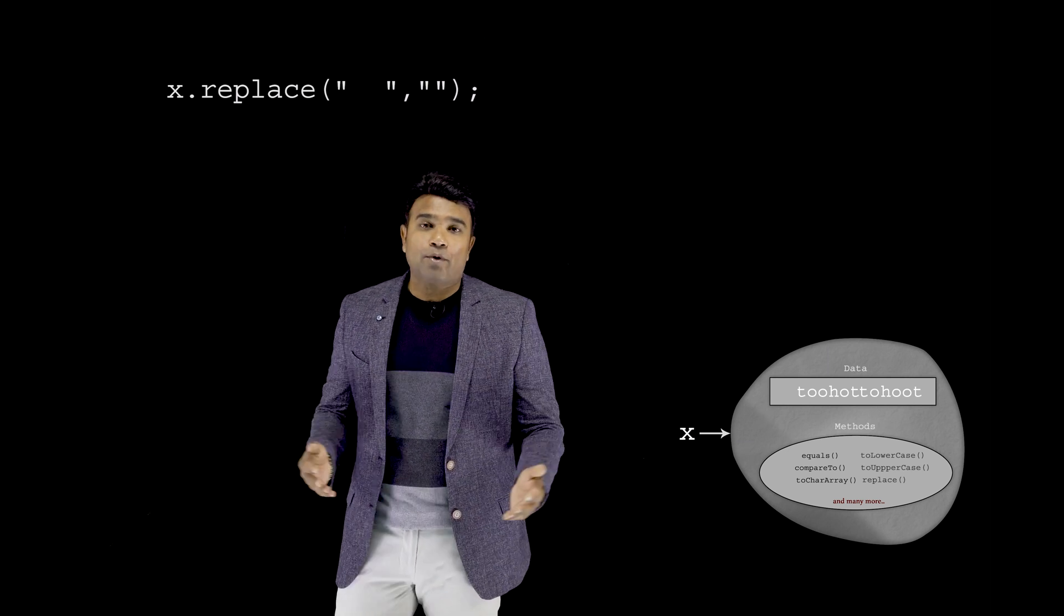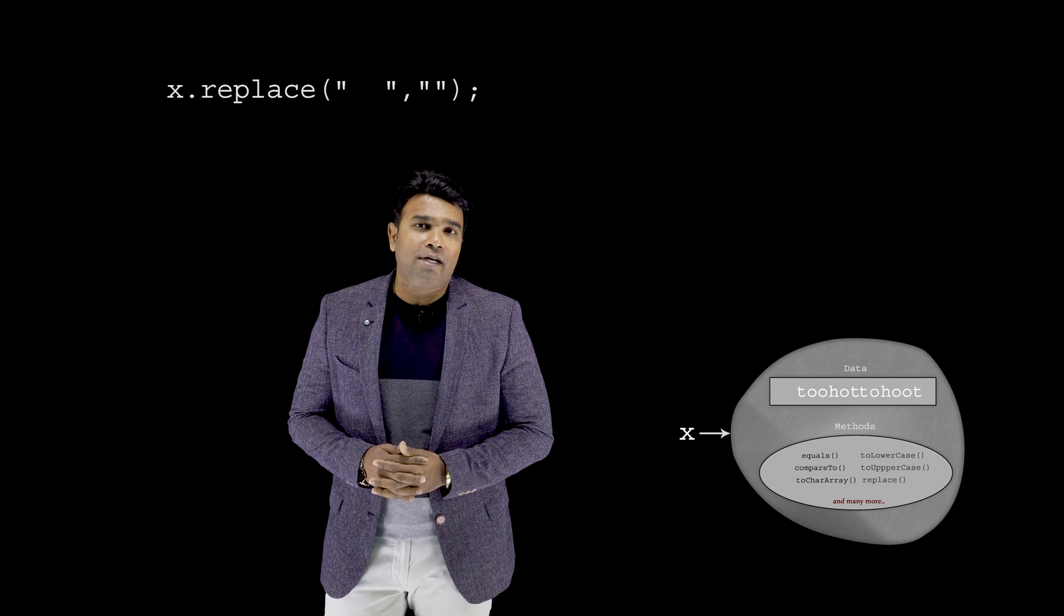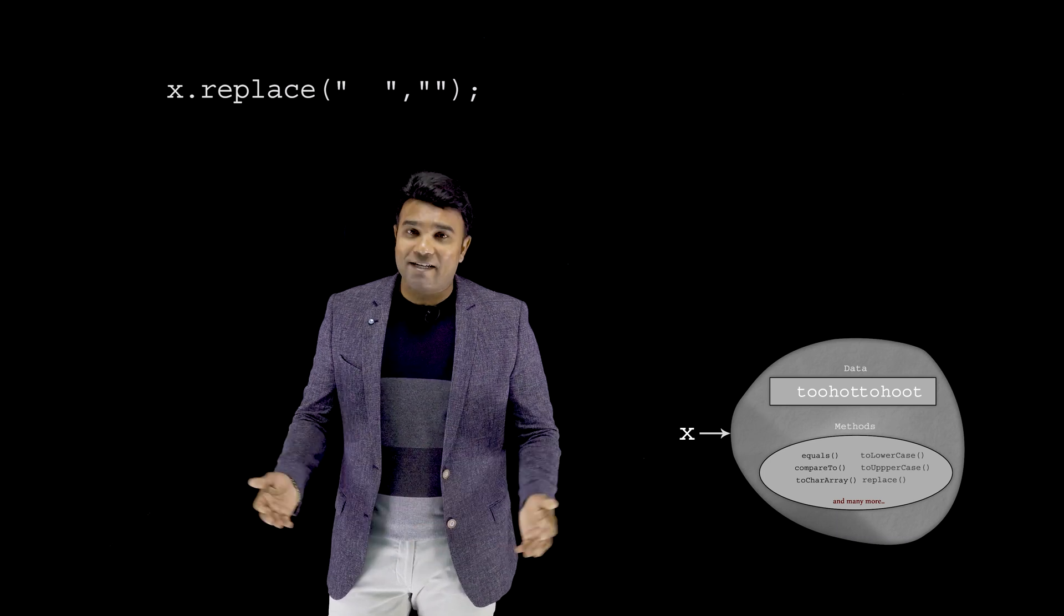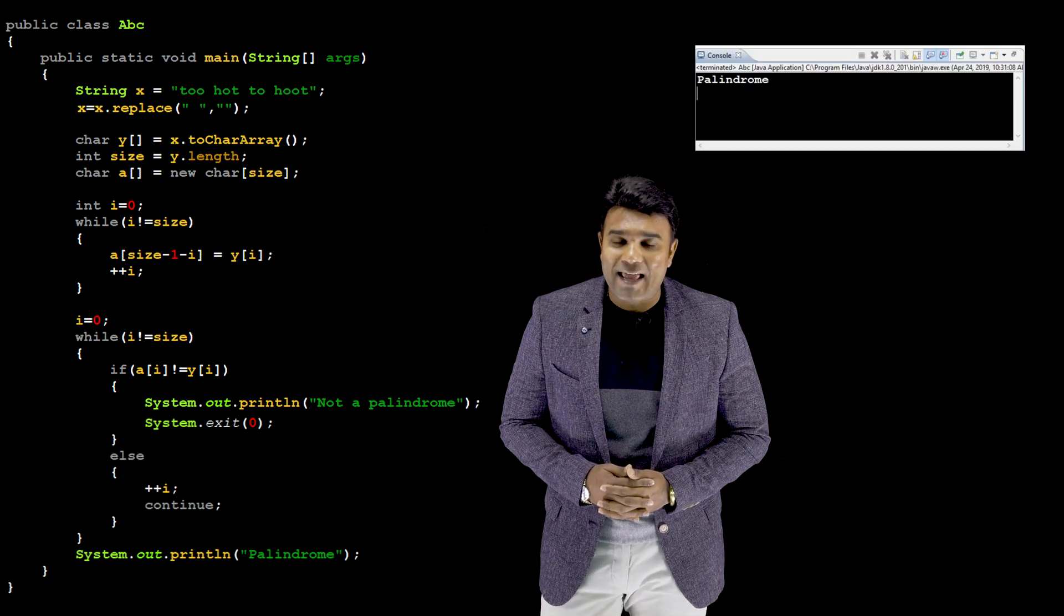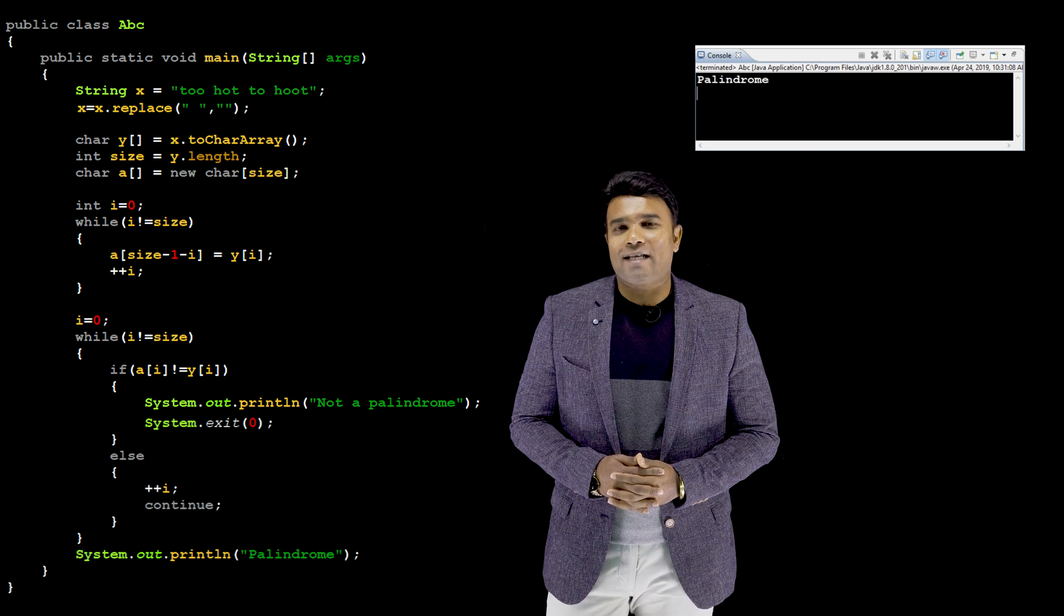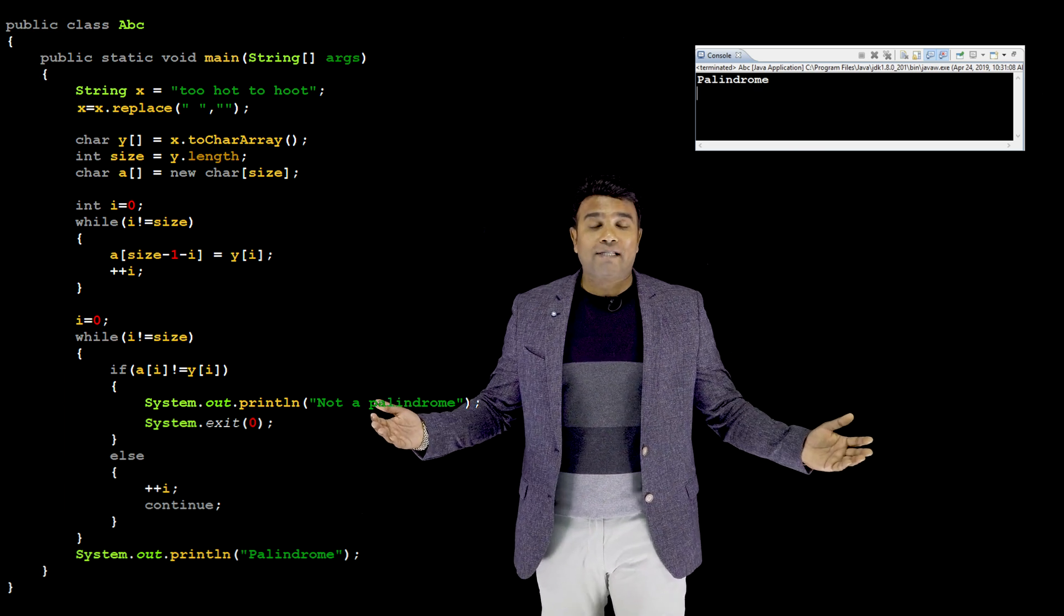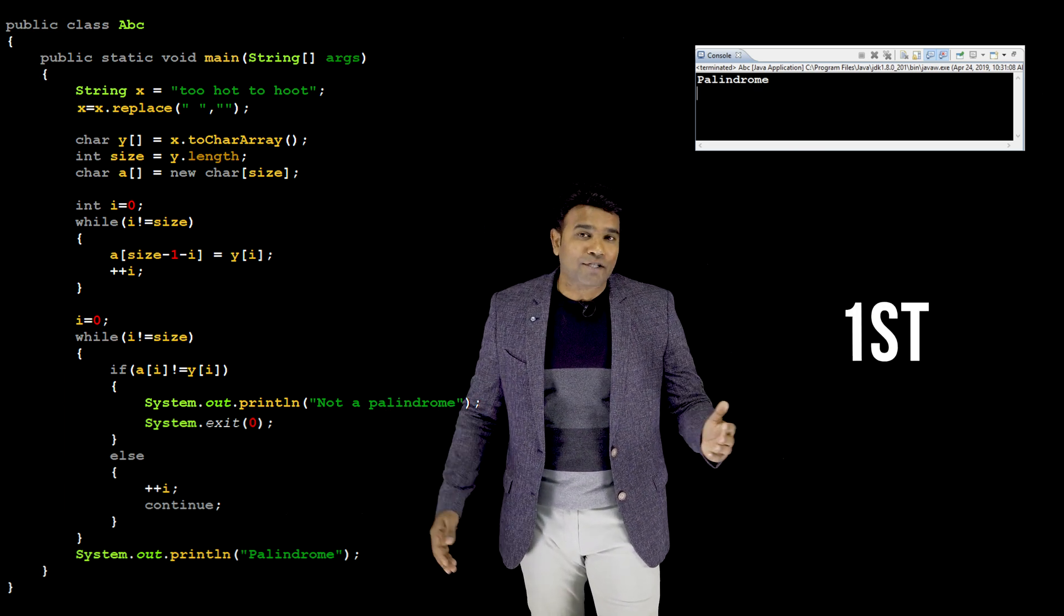And now, if I give this as the input to my program, certainly it would work fine. Anyway, let's check. This is the program of my previous episode. All that I have to do is to add that one line of code involving the replace method. And I add that line of code. And now when I'll execute, this is the output. Well, I am getting the right output this time. So, I've been successful in tackling the first issue.